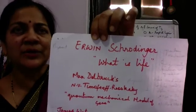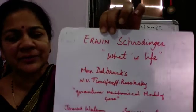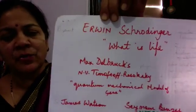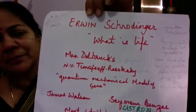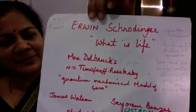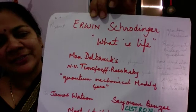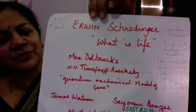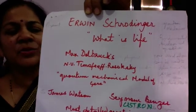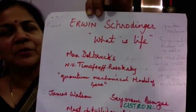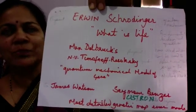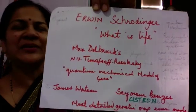One of Schrödinger's friends, Max Delbrück, was also a physicist, along with geneticist N.V. Timoféeff-Ressovsky. They wrote a chapter called 'A Quantum Mechanical Model of the Gene.' Two young scientists read this book and were impressed by it.